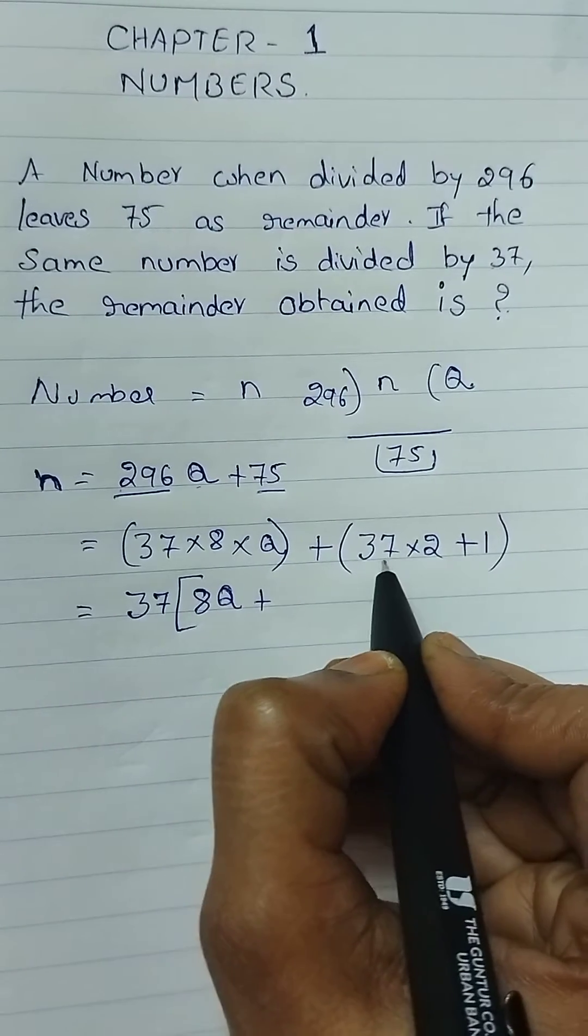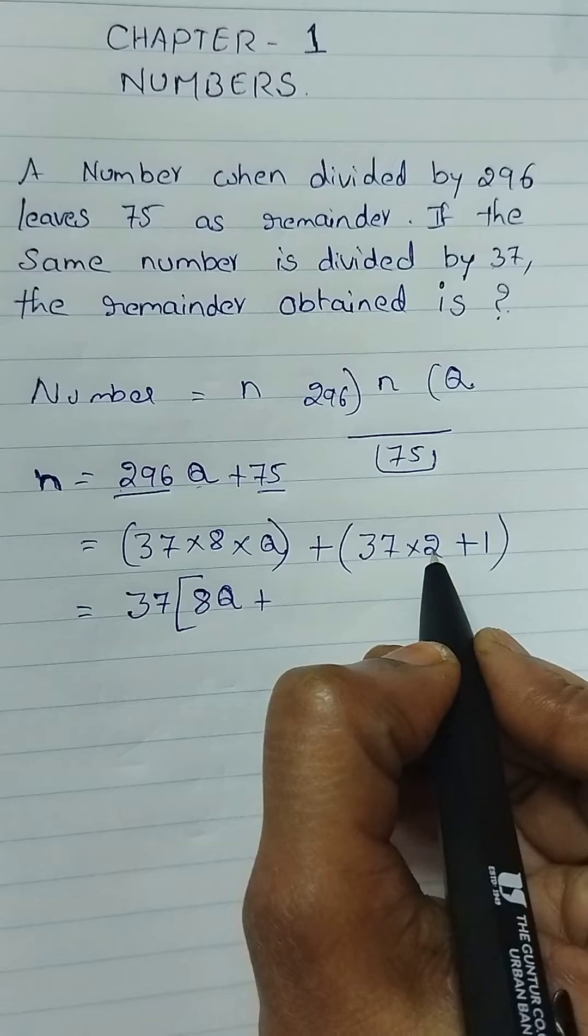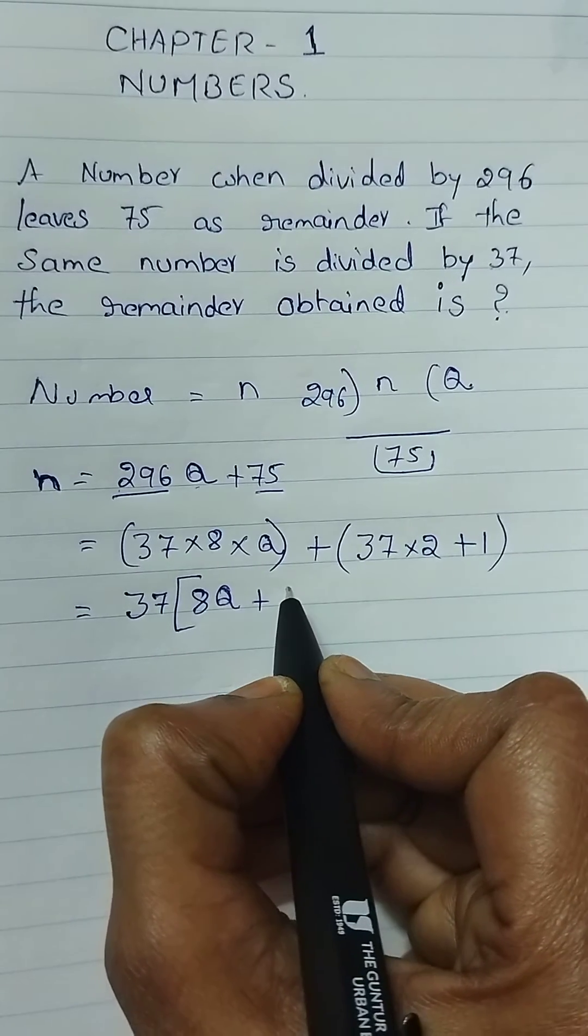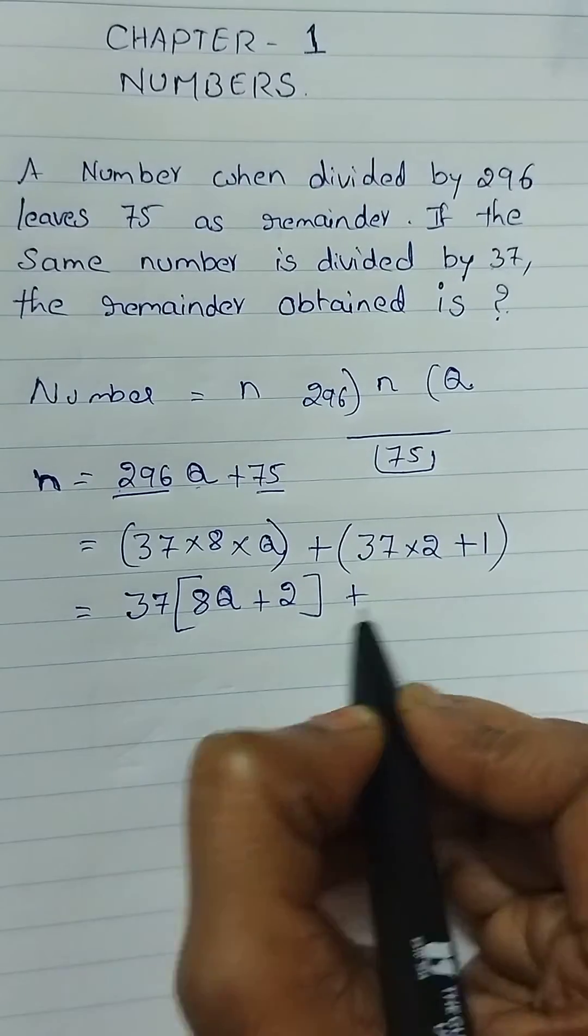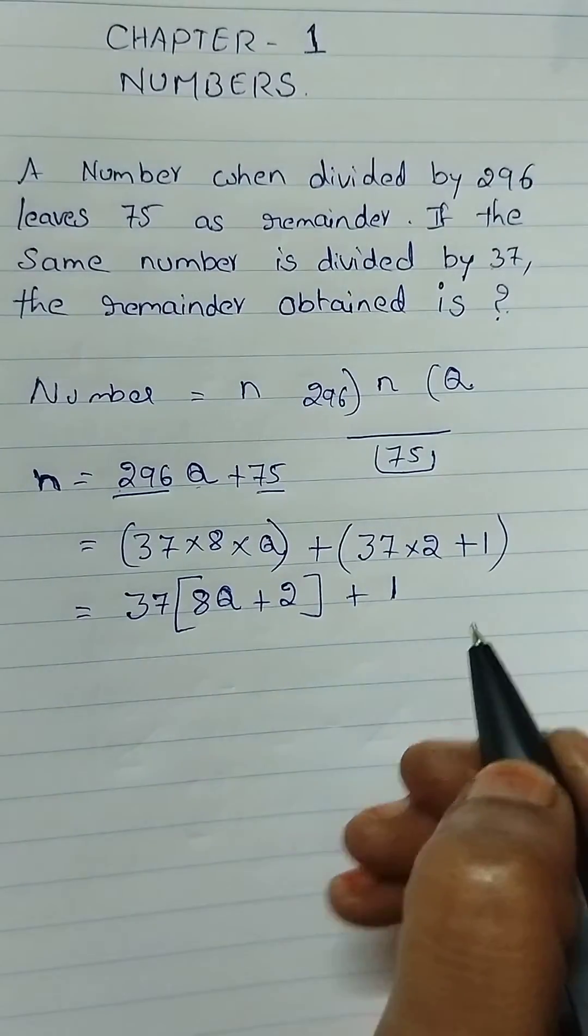37 is taken as common, then we can get 8q plus 2. 37 is taken as common, here it remains plus 1.